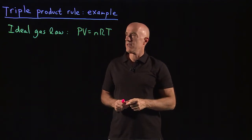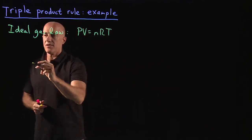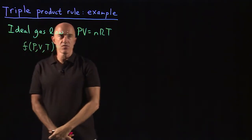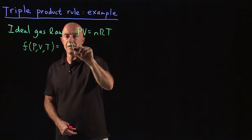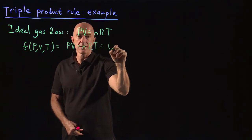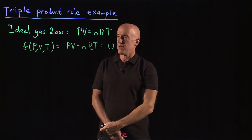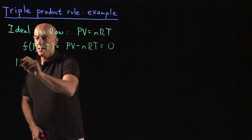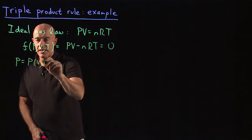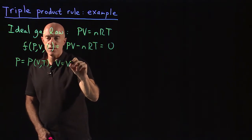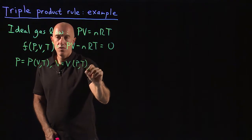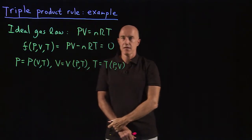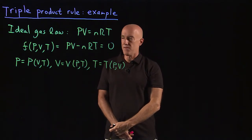So if you remember when I derived the triple product rule, I said that there's a function of the variables P, V, and T which is equal to 0. That function would simply be PV minus nRT equals 0. So there's one relationship between the three variables P, V, and T. So one of these variables can be written as a function of the other two.